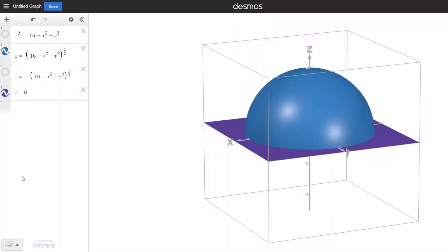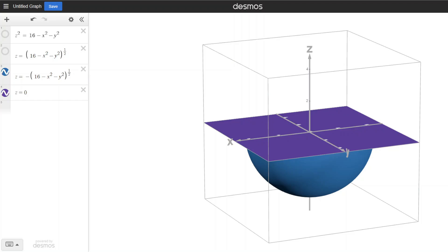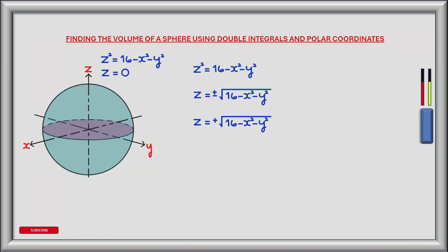If we look at the positive square root in graphical form, we see that it lies above the x-y plane, while the negative square root lies below. Equating the upper hemisphere to the x-y plane gives the square root of 16 minus x squared minus y squared equals zero. Squaring both sides gives 16 minus x squared minus y squared equals zero, and therefore x squared plus y squared equals 16. As we can see, this is the equation of a circle with radius 4.